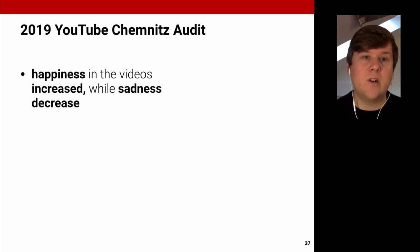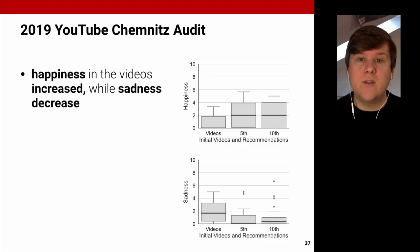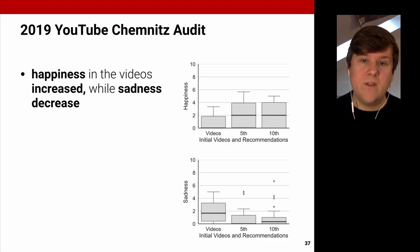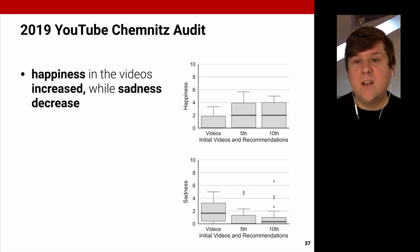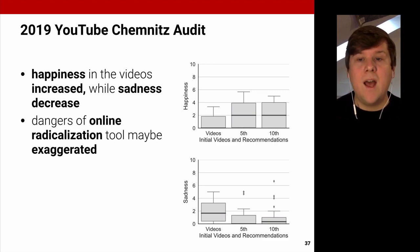We also found that happiness in videos increased while sadness decreased. Happiness changed from a median of 0 for initial videos to a median of 2 for the fifth and tenth recommendations — more than half of the fifth and tenth recommendations had a happiness rating higher than 2. For sadness, the trend was opposite: median ratings moved from 1.67 for initial videos down to 0.0 for the fifth and 0.33 for the tenth recommendations. Overall, in contrast to what the New York Times reported, our findings suggest that the dangers of online radicalization may be exaggerated.